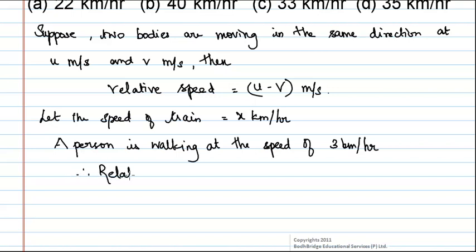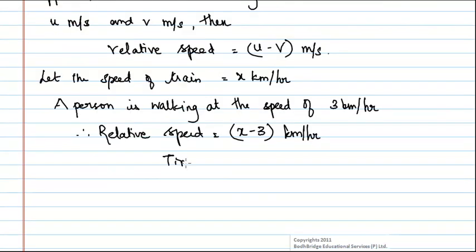Therefore, relative speed is equal to x minus 3 km per hour. Here, time is given as 9 seconds. We can convert it into hours by dividing by 60 twice. We will get 9 by 3600 hours.